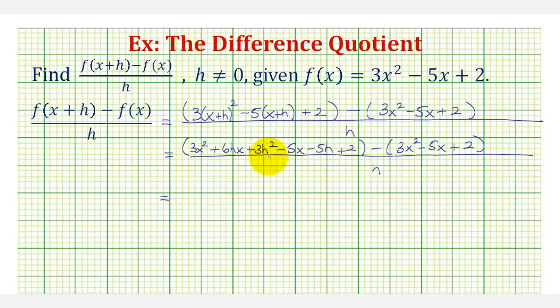And now for the next step, we'll clear the parentheses and combine the like terms in the numerator. So if it's helpful, we can think of distributing a positive one here, and because of the subtraction, we can think of distributing negative one here. So no signs will change in this first set of parentheses. But when we distribute negative one, it's going to change the sign of each of these terms. So we'll have minus three x squared, negative one times negative five x is plus five x, and negative one times positive two would be minus two. All divided by h.